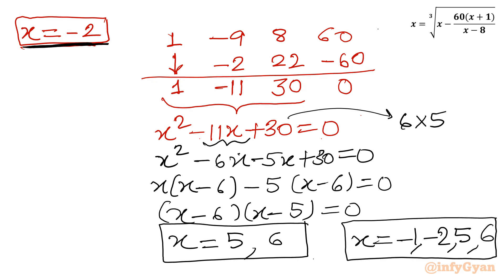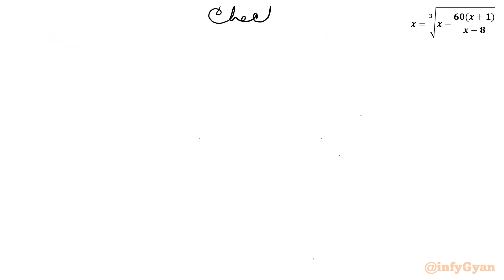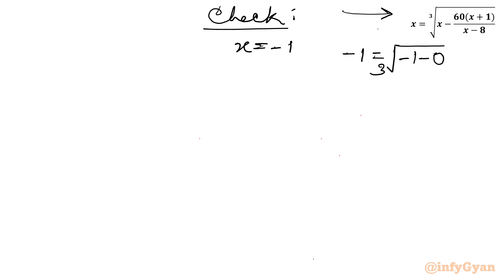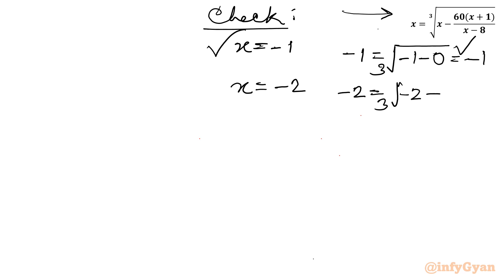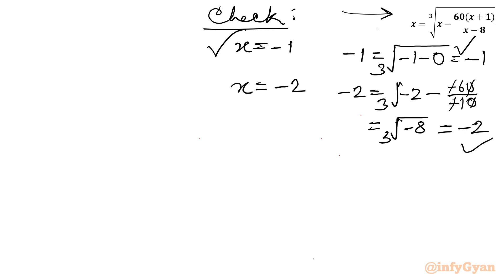As in Method 1, let's verify all solutions. Check x = minus 1: LHS = minus 1; RHS = cube root of (minus 1 minus 0) = cube root of minus 1 = minus 1. True. Check x = minus 2: LHS = minus 2; RHS = cube root of (minus 2 minus 60 × (minus 1) / (minus 10)) = cube root of (minus 2 minus 6) = cube root of minus 8 = minus 2. Verified.